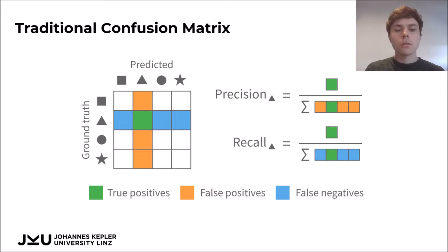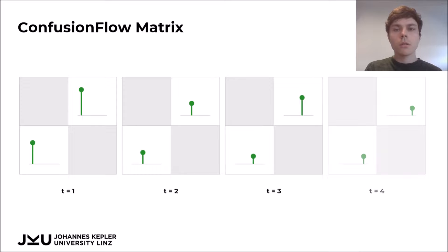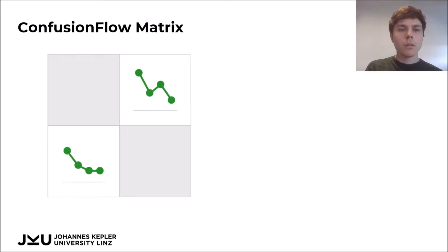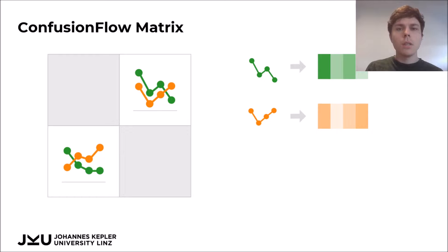Now let's assume that we have a confusion matrix for each iteration of the training loop. For the Confusion Flow matrix, we simply bring together all these matrices such that a single value is replaced by a temporal line chart of the confusion. If we want to compare multiple models, we can simply add additional line charts for each model. Since this visualization can be prone to visual clutter due to overplotting, you can also transform each line chart to a heat map where time progresses from left to right. Instead of overplotted lines, you can stack those heat maps to form so-called clasagna plots, giving rise to the second version of the Confusion Flow matrix that uses the heat map encoding.